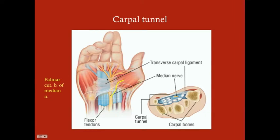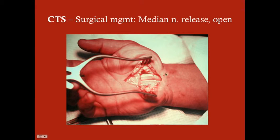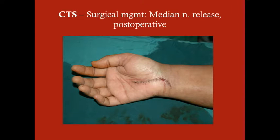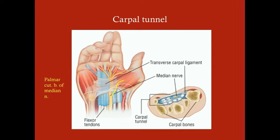You want to cut on the medial side, not the lateral side, to avoid injuring the palmar cutaneous branch. Finally, a patient with true carpal tunnel syndrome should not have numbness over the thenar eminence, because the affected portion of the median nerve is distal to where the palmar cutaneous branch came off. If a patient does have numbness over the thenar eminence, consider median nerve entrapment somewhere more proximal to the carpal tunnel.